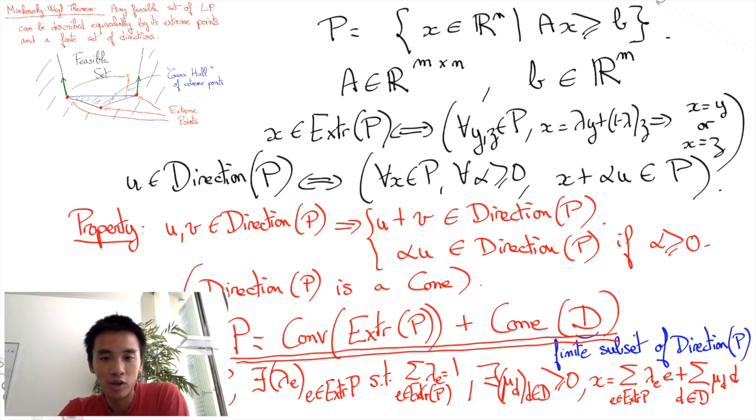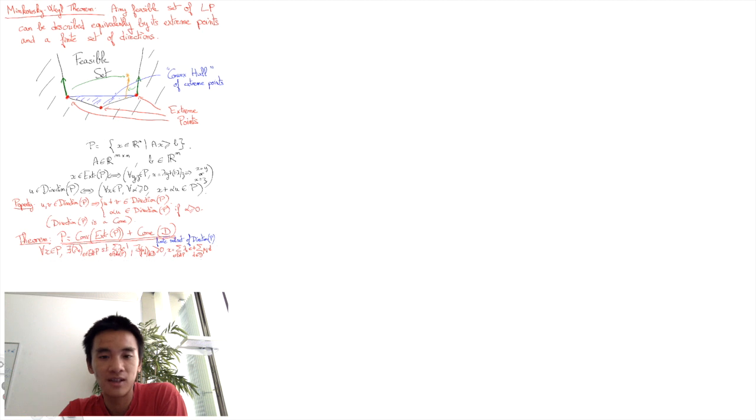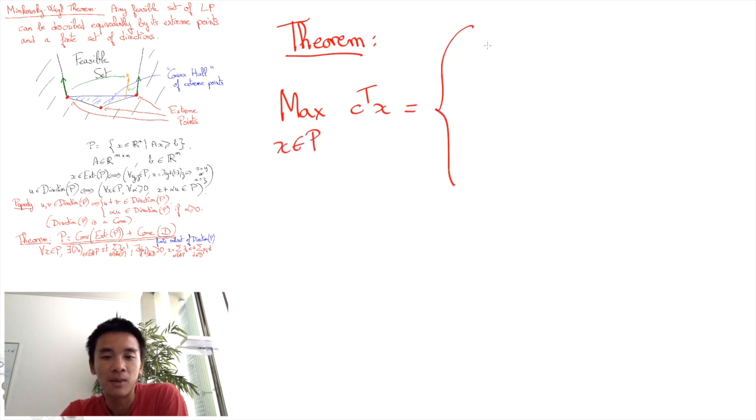Maximizing a linear objective function using such a decomposition is then straightforward. Say the linear objective function is f(x) equals to C transpose x. If C transpose D is positive for some value D in D, then the linear program is unbounded. The objective function can be arbitrarily large for feasible solutions.